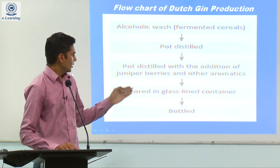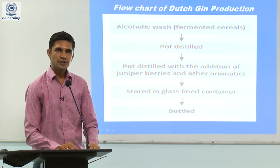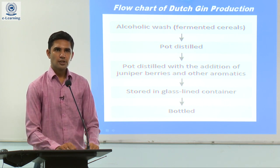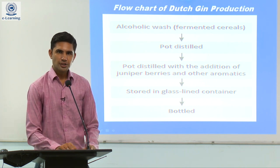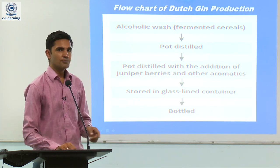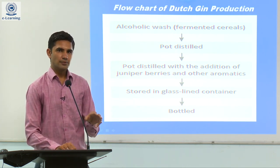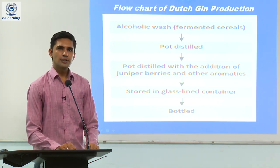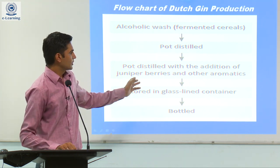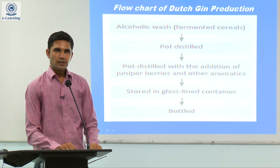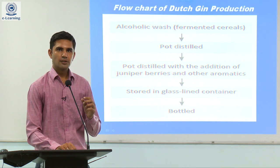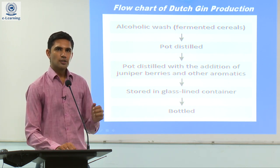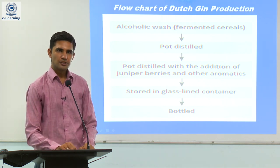After flavouring, we store our Gin in glass-lined containers or stainless steel containers. The purpose of maturing Gin here is not to give colour but to develop flavour, so the maturation period is short — not for 6 months or 1 year. Before bottling, we dilute the spirit obtained from distillation, reducing it to 94 to 98 degrees proof. Then we do the bottling — and that is how we make Dutch Gin.